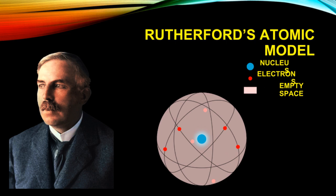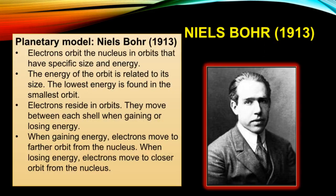In Rutherford's atomic model, electrons revolve around the nucleus and most of the space in the atom is empty. Next is the planetary model proposed by Niels Bohr in 1913, in which electrons orbit the nucleus in orbits that have specific size and energy.